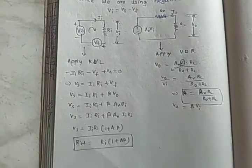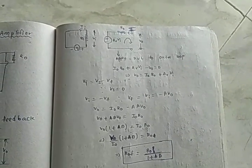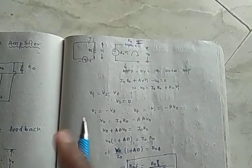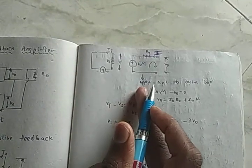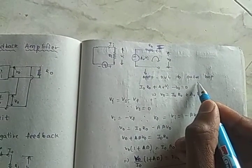To find out the output impedance, we must short-circuit the source and open-circuit the load at the feedback network. Then apply KVL to the outer loop.